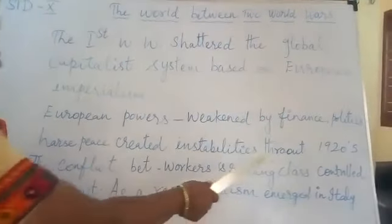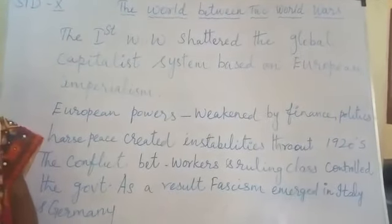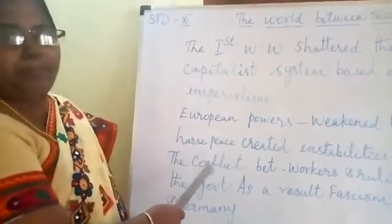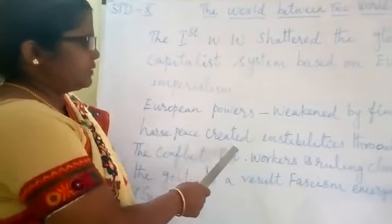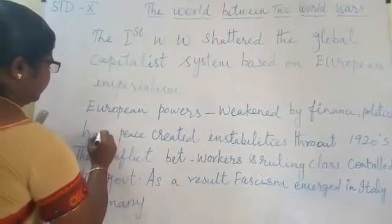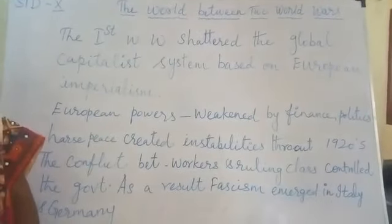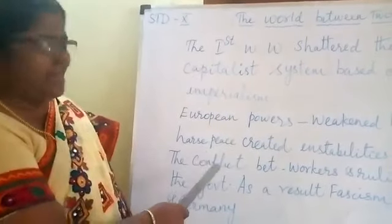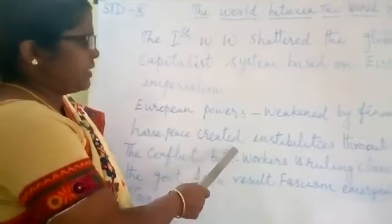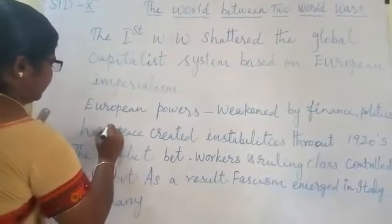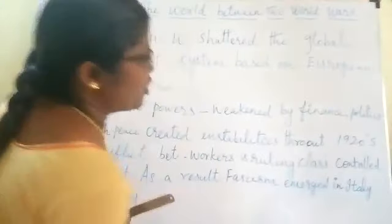After the First World War, harsh peace treaties — like the Treaty of Versailles and many other peace treaties that were signed — created instability throughout the 1920s.